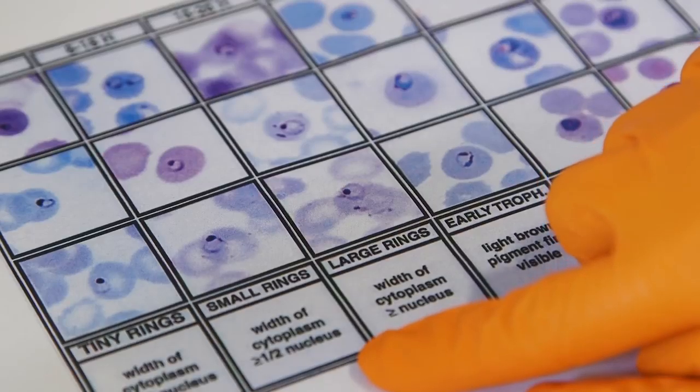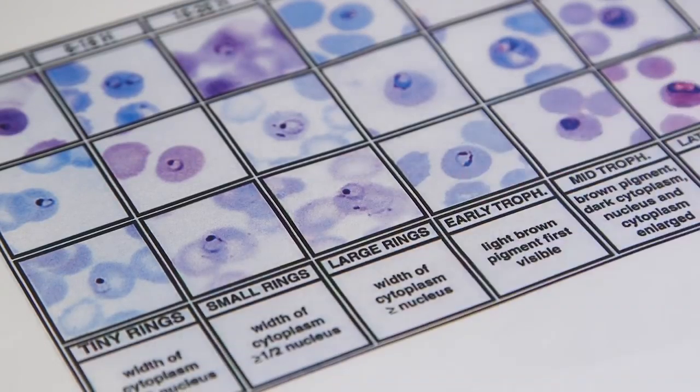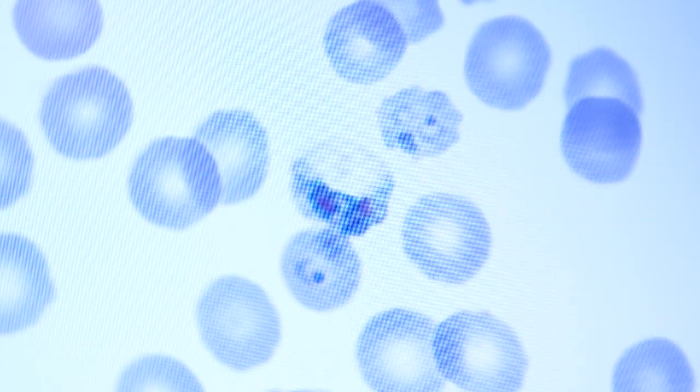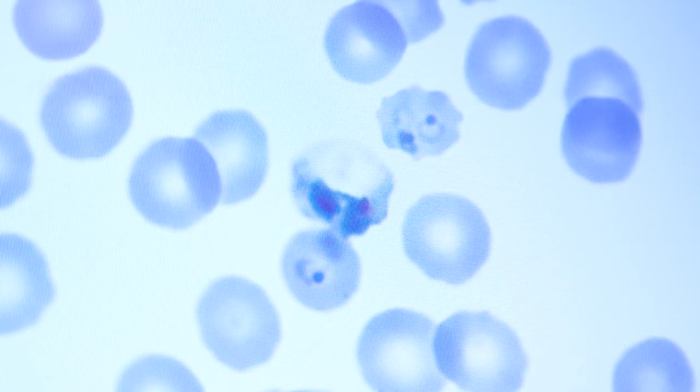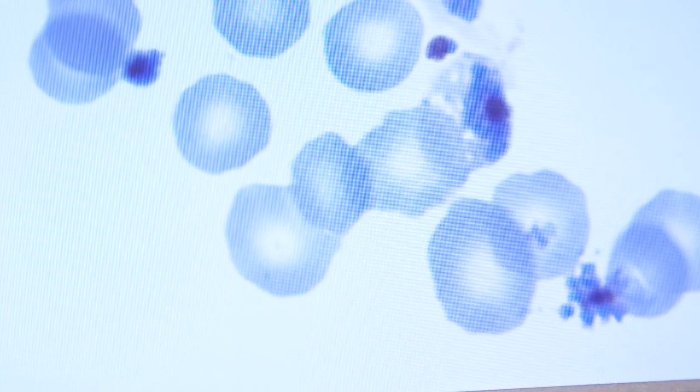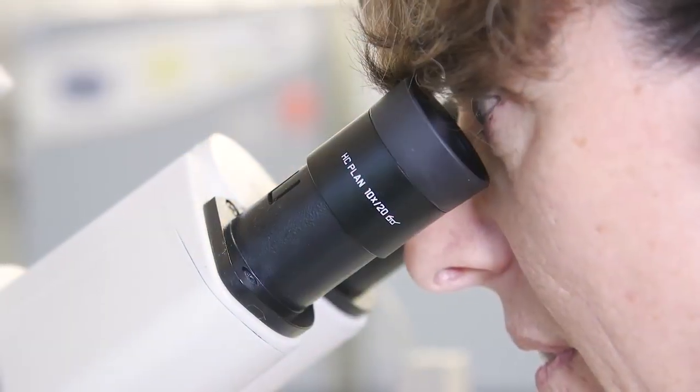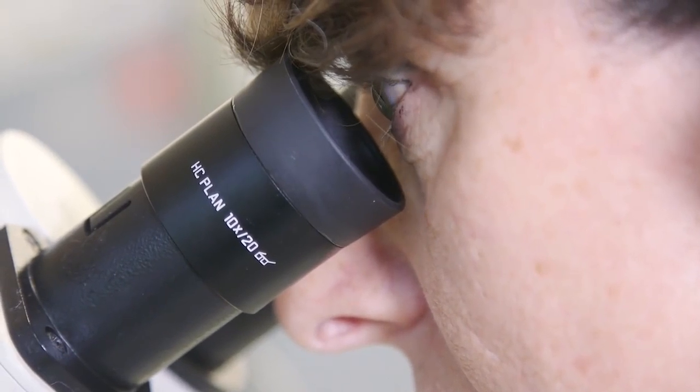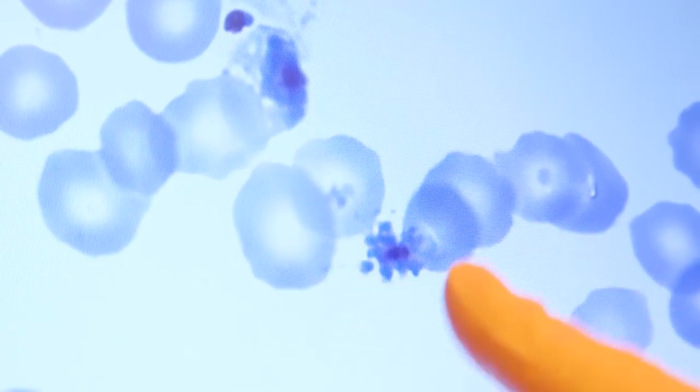The very small ones are rings that will grow into bigger parasites called trophozoites. These will start multiplying and form a schizont, the mature form of the parasite that will burst out of the red blood cell and invade new cells.